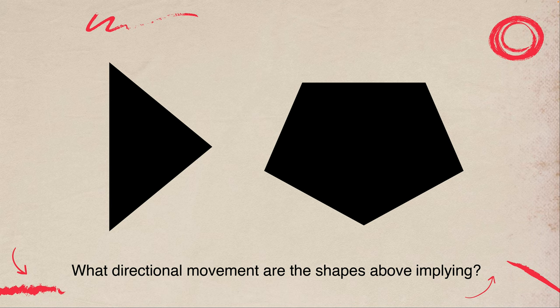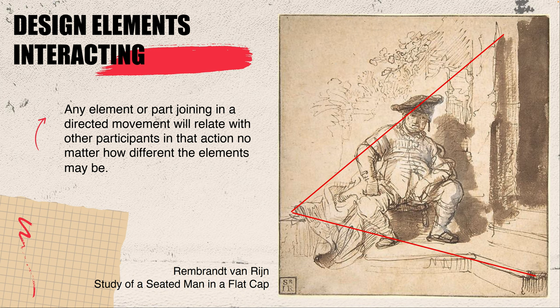With these two arbitrary objects, we can identify directional movement. The triangle has a sense of movement from left to right, or pointing to the right. And this pentagon-ish shape has a sense of pointing down. It doesn't have to necessarily just be objects that have this sense of pointing or motion — it can be in your composition as well.